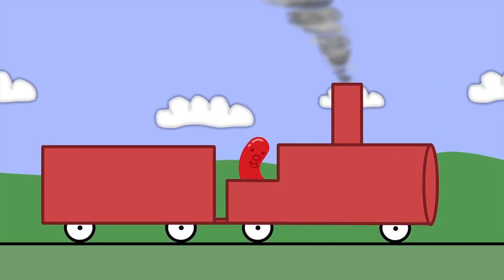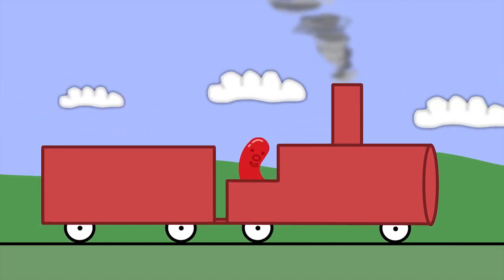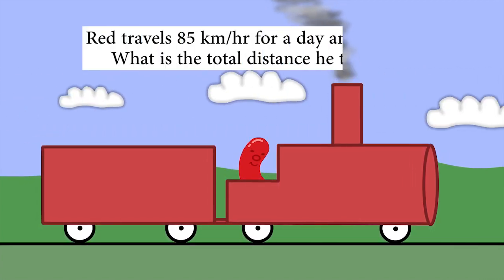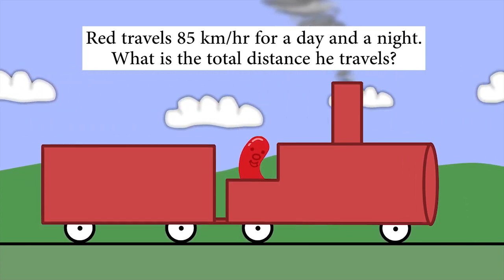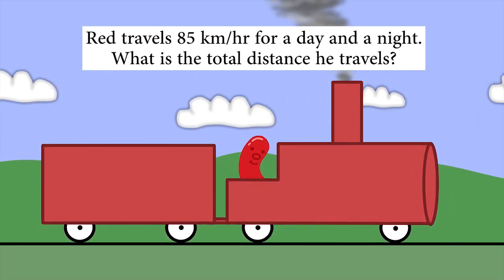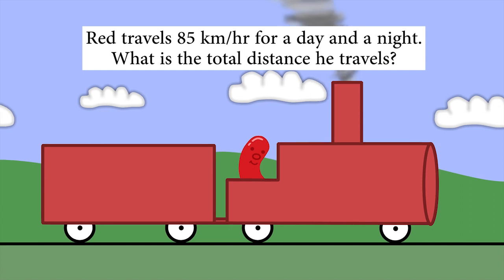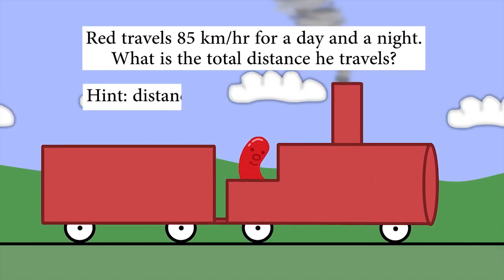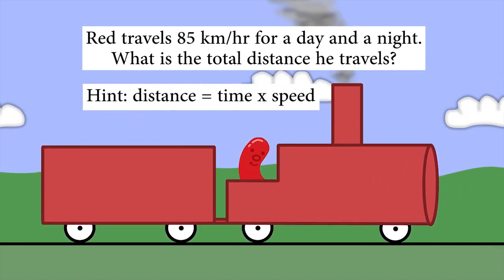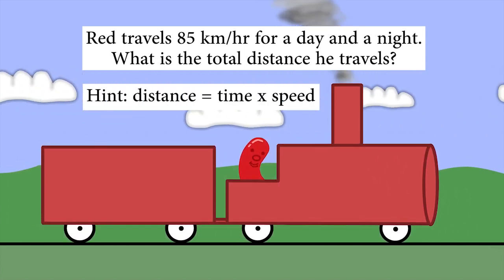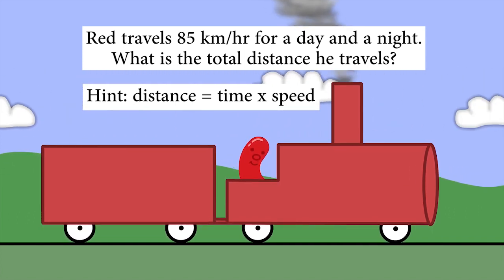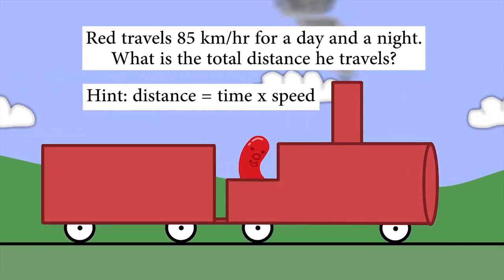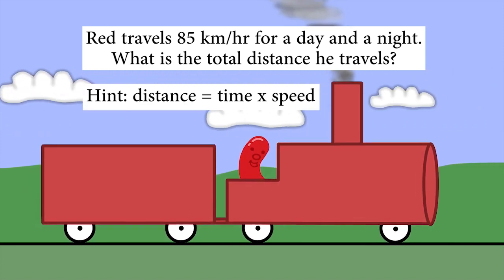I like going on long trips on my red train. If I travel at 85 kilometres an hour, how far can I go if I travel all day and all night? Here's a hint: you can use the formula — the distance I travel equals the length of time I spend travelling multiplied by my speed.